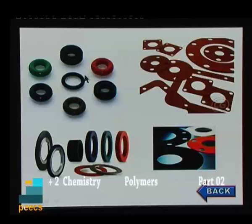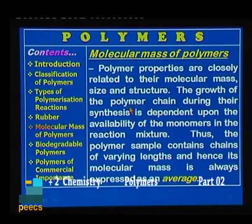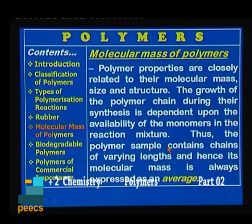Next is about molecular mass of polymers. Polymers are macromolecules containing a large number of monomer units, so they have very high molecular mass. Polymer properties are closely related to their molecular mass, size, and structure. The growth of the polymer chain during synthesis is dependent upon the availability of monomers in the reaction mixture. Thus, the polymer sample contains chains of varying lengths, and hence its molecular mass is always expressed as an average.